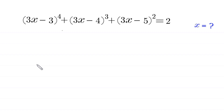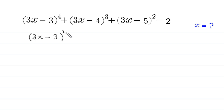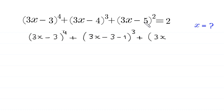Hello everyone, welcome to how to solve this very nice algebra equation: (3x-3)⁴ + (3x-4)³ + (3x-5)² = 2. Our job is to find all possible values of x. We start by noting that (3x-4) can be written as (3x-3-1), and (3x-5) can be written as (3x-3-2).